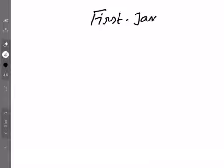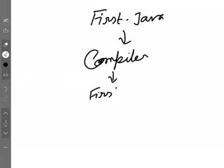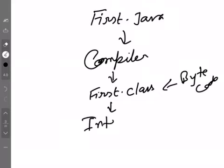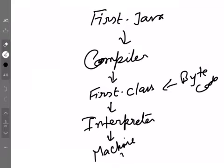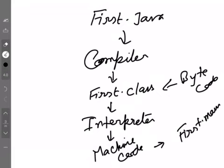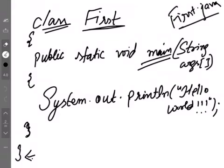Java is both compiled and interpreted. The first.java program is written first, then it goes to the compiler. The compiler compiles it and creates a file called first.class — that is the bytecode. Then we run a command to the interpreter, which generates machine code and executes it. The operating system then calls first.main. If there is no main, the program will not execute. That's why we make main.